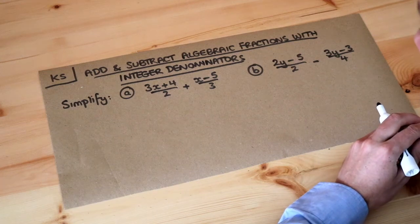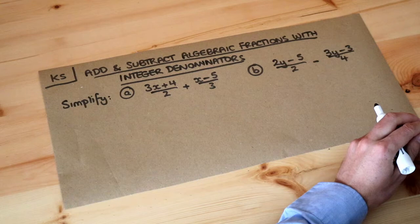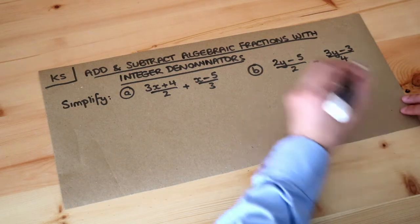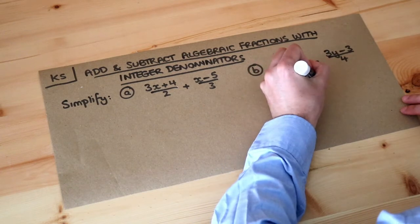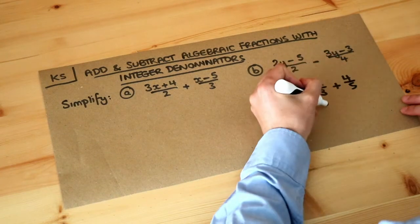Hello and welcome to this Dr. Rosemath's key skill video on adding and subtracting algebraic fractions with integer denominators. Now let's just think how we usually add fractions. If I had two thirds and I wanted to add four fifths, what would you do?